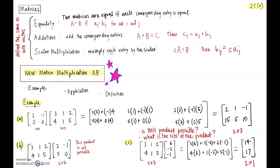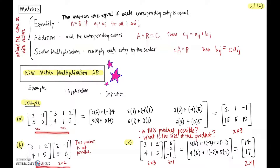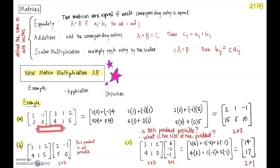So 2 by 3 times 3 by 1 resulted in a 2 by 1. You can see what has to happen for multiplication to work: these inner numbers — both 3s — have to match up. That's what enables each row to have a matching element in each column. The size of the resulting product is determined by the outer numbers: 2 by 1. In the first example, the inner numbers matched and we got a 2 by 3 result.